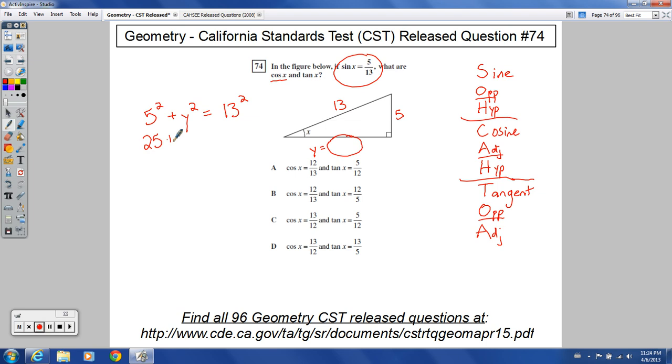This would be 25. This would still be y squared. This would be 169. And so I subtract 25 from both sides. That leaves me with y squared. This canceled here, equals 144. Telling me that if I take the square root of both sides, that y would equal 12. So I could put in 12 right there.